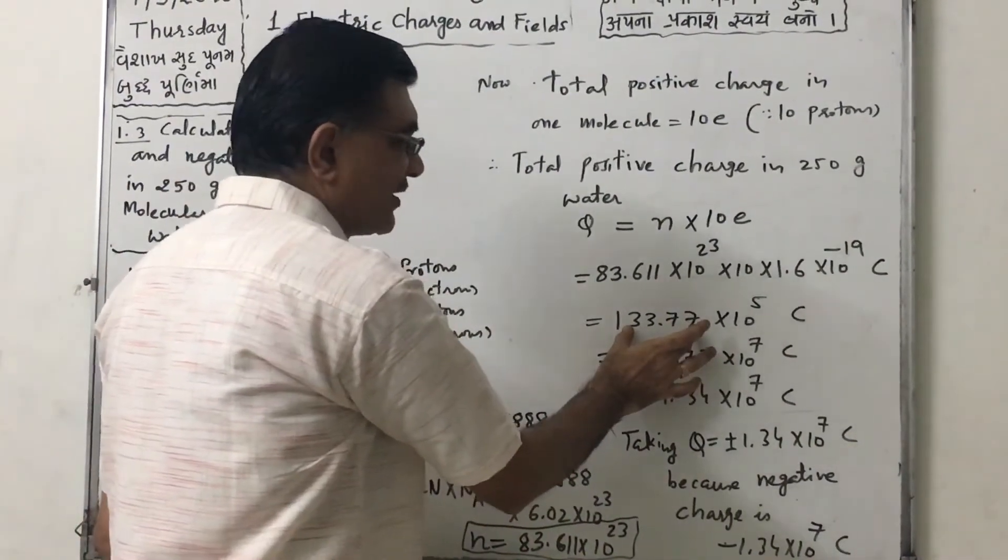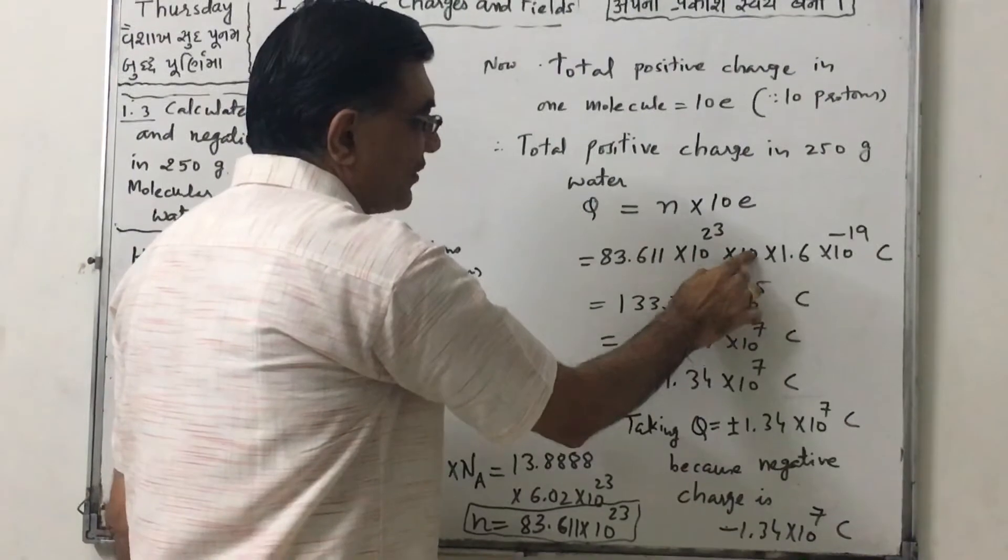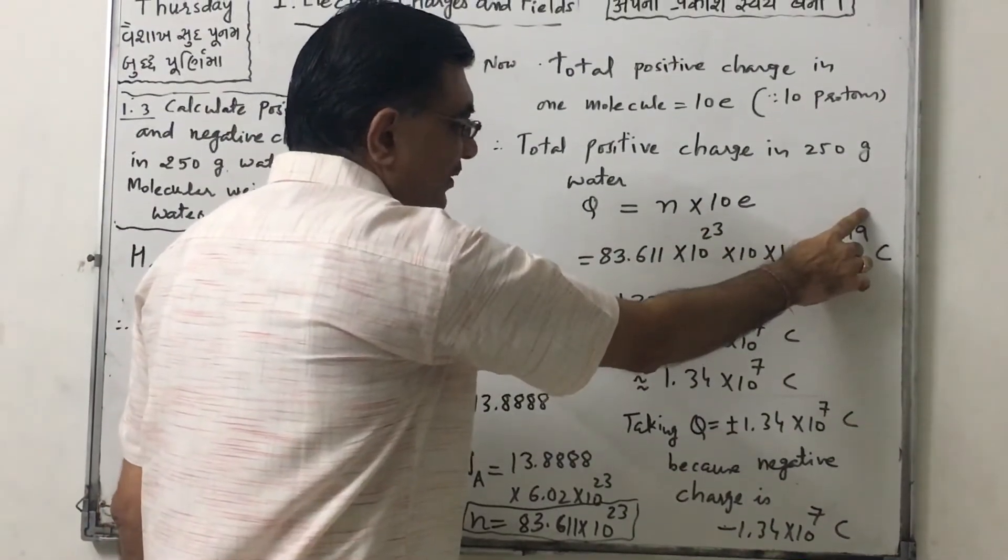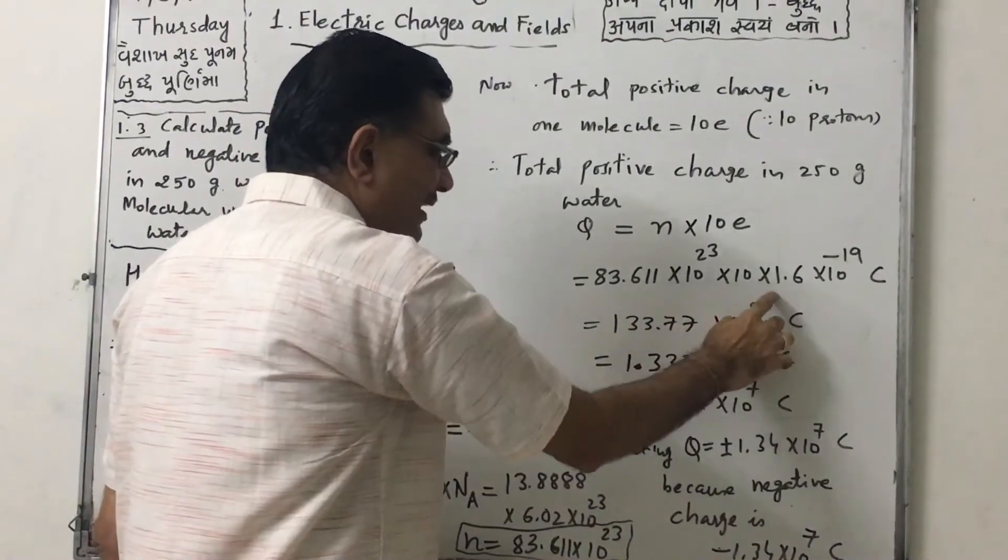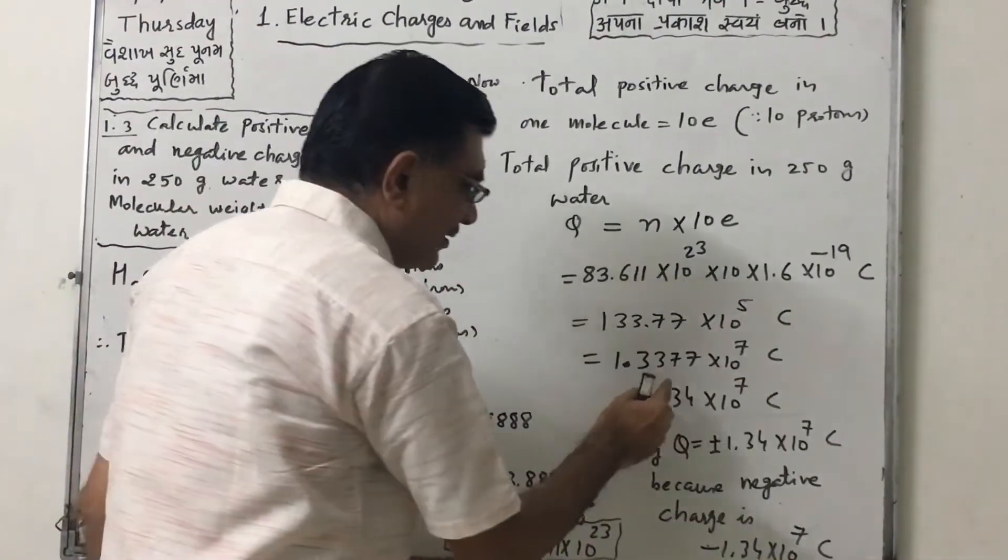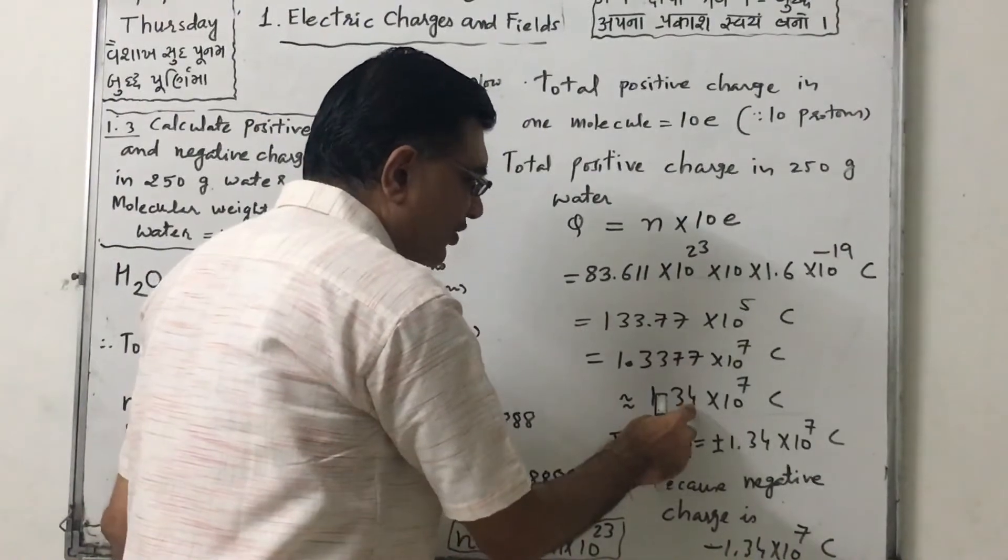So this product will be 133.77 into 10 raise to 4 minus 19. So 10 raise to 5. Can be written as 1.3377 into 10 raise to 7. Can approximate it is 1.34.